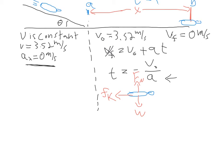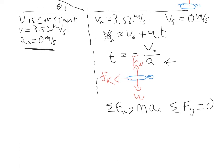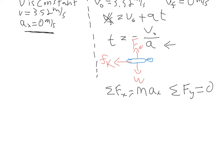On the flat part, his acceleration is not equal to 0. Let's look at the forces. The sum of forces in x equals mass times acceleration in x. The sum of forces in y equals 0, since he's not leaving the ground. In the x direction, all we have is negative force of kinetic friction equals mass times acceleration. In the y direction, normal force minus weight equals 0.